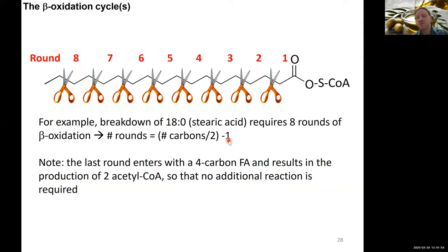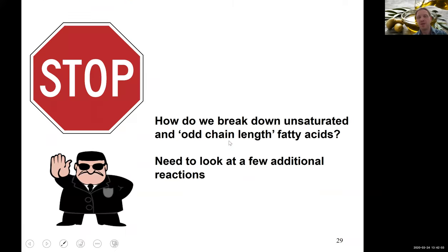This is the straightforward case for saturated fatty acids with no double bonds. But what do we do with unsaturated fatty acids that already contain double bonds, or with fatty acids that have odd chain lengths — not following the 2+2+2 carbon rule?